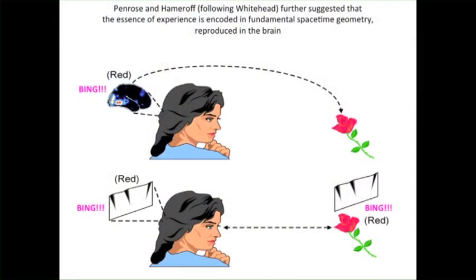Our approach to the hard problem: the conventional explanation is that the redness of the rose — the qualia — is due to a pattern of activity in the brain. Our approach would be that the qualia of the rose is due to a pattern in fundamental space-time geometry shown as curvature in a two-dimensional space-time sheet, which is then reproduced or recreated in her brain. Since it's non-local, this may be directly connected, and the bing occurs here but it's also out here in the universe.